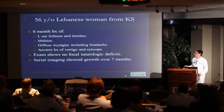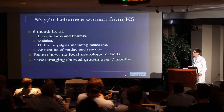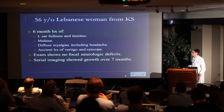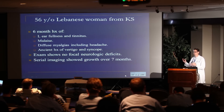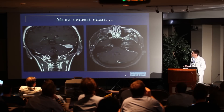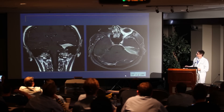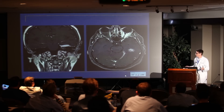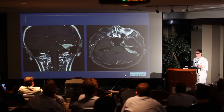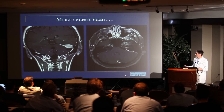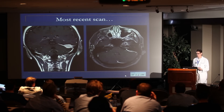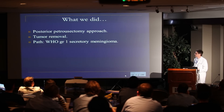Here's a case that illustrates all those examples. This is a woman originally from Lebanon, now living in Kansas, who had a six-month history of ear fullness, tinnitus, myalgias, headache, and an old history of vertigo. She had a normal neurologic exam. An MRI showed a lesion, and seven months later it had grown. Going back to the original questions: it's posterior fossa and middle fossa, the temporal bone is just a bystander, it doesn't go into the IAC, but some of the dura enhances. I thought this was a very good case for a posterior petrosectomy.